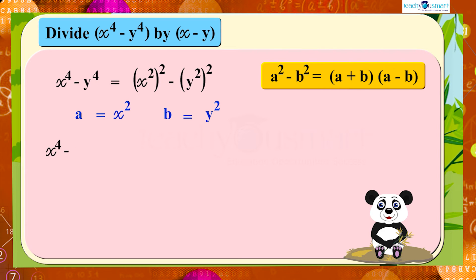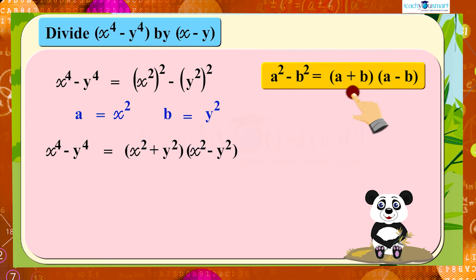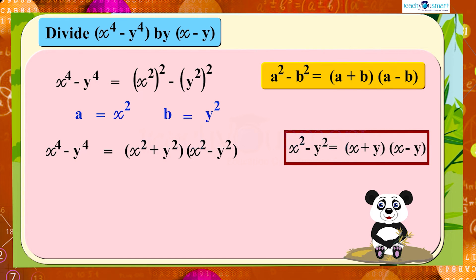Then x⁴ − y⁴ equals (x² + y²)(x² − y²). Again, by the same identity, we can write x² − y² as (x + y)(x − y).